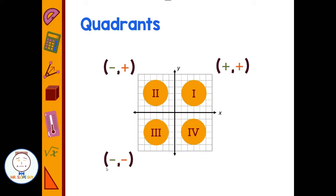Quadrant III we have negative negative. We go left and down, so negative x value, negative y value. And quadrant IV is positive x and negative y.